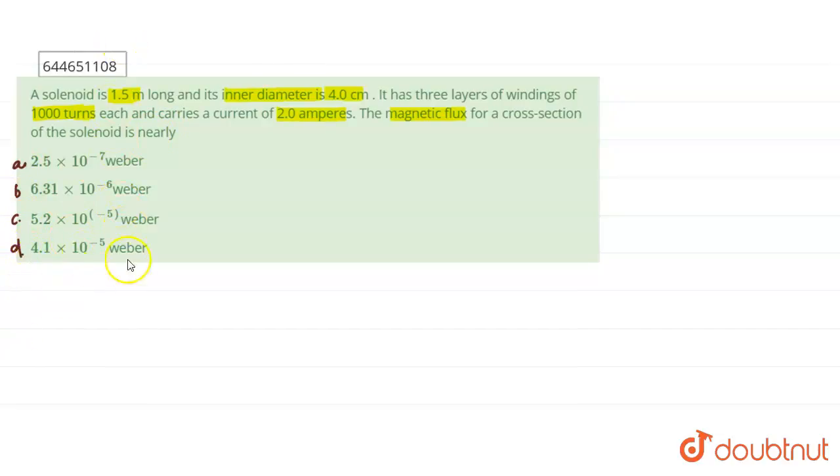This question is very direct and we can write first of all the quantities or parameters given in the question. The length of the solenoid L is equal to 1.5 meters. Then the inner diameter—the radius can be written in terms of meters. Diameter is 4 centimeters, so radius is half of that, which is 2 centimeters, that means 2 × 10⁻² meters.